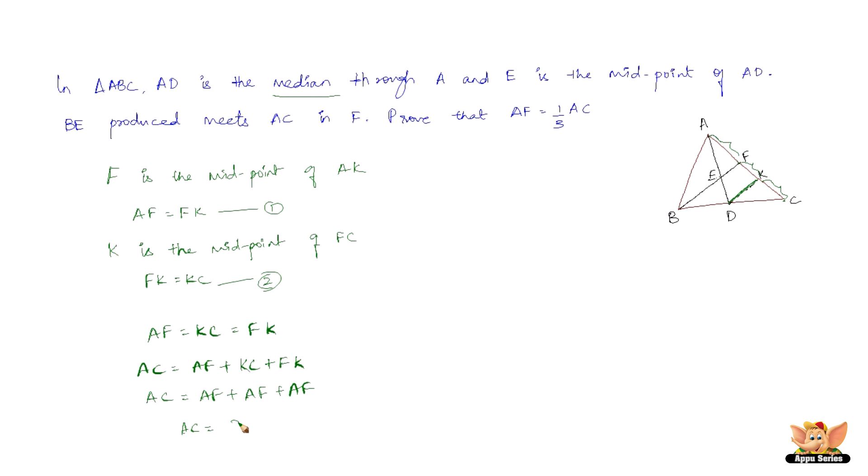Now we have AF equals one-third of AC, which is what we wanted. Hence proved. Again, the main concept here is using the converse of the midpoint theorem. That's the most important concept to be used in these kinds of problems.